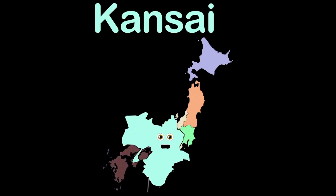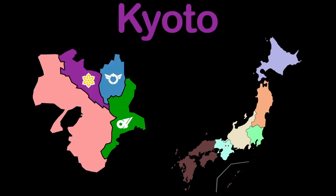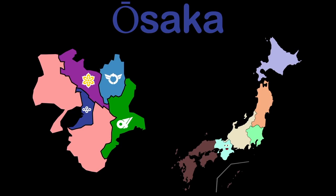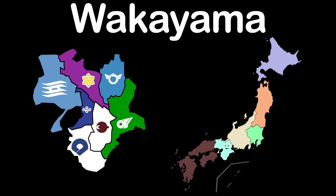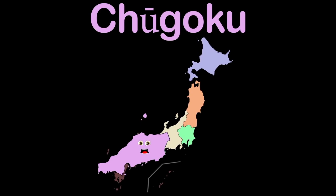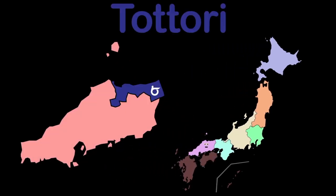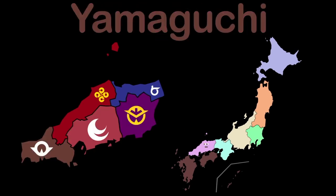My name is Kansai — I'm in the southern central area with 7 prefectures: Mie, Shiga, Kyoto, Osaka, Hyogo, Nara, and Wakayama. Chugoku is a region with 5 prefectures: Tottori, Shimane, Okayama, Hiroshima, and Yamaguchi. Shikoku is a southeast region with four prefectures: Tokushima, Kagawa, Ehime, and Kochi.